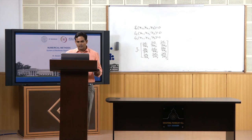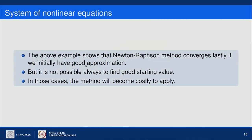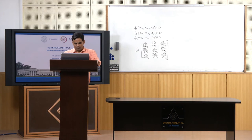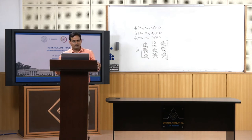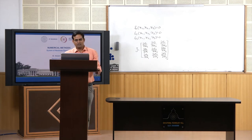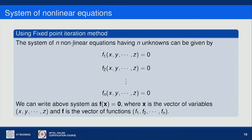The above example shows that the Newton-Raphson method converges quickly if we initially have a good approximation close to the solution. However, it is not always possible to find a good initial solution, and in those cases the method can become costly to apply.